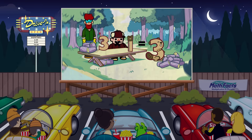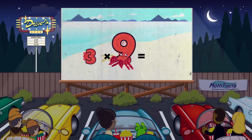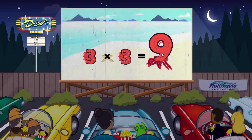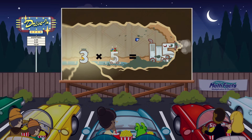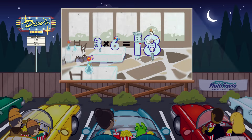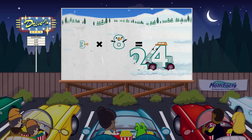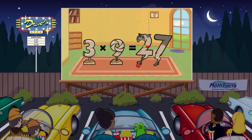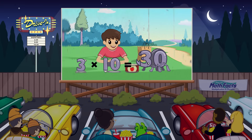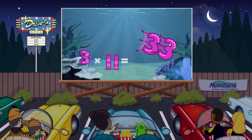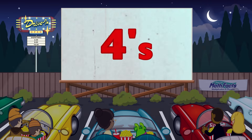3 times 1 equals 3. 3 times 2 equals 6. 3 times 3 equals 9. 3 times 4 equals 12. 3 times 5 equals 15. 3 times 6 equals 18. 3 times 7 equals 21. 3 times 8 equals 24. 3 times 9 equals 27. 3 times 10 equals 30. 3 times 11 equals 33. 3 times 12 equals 36. Now let's try fours!